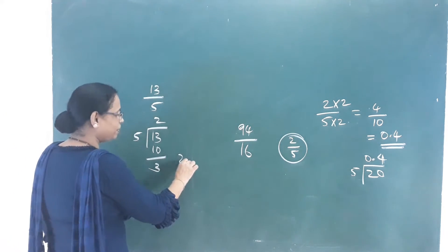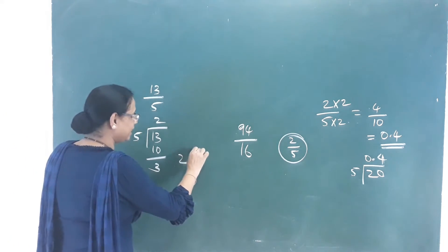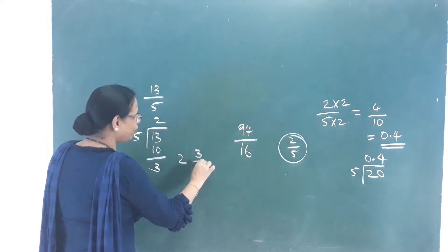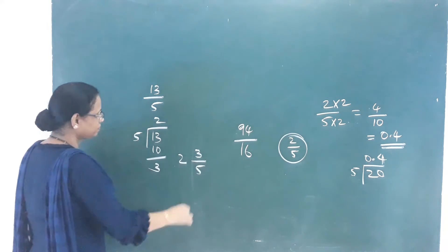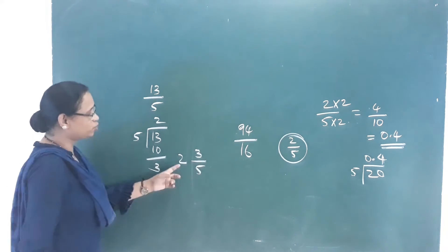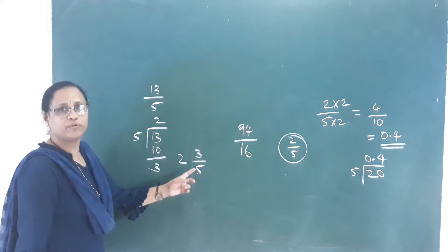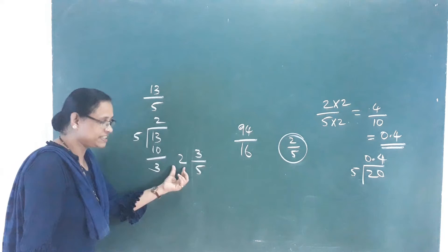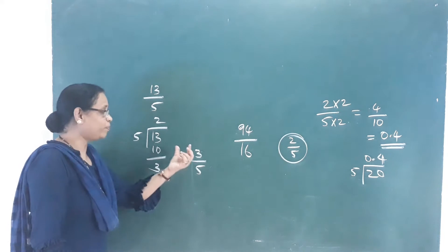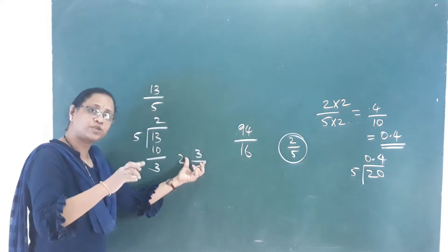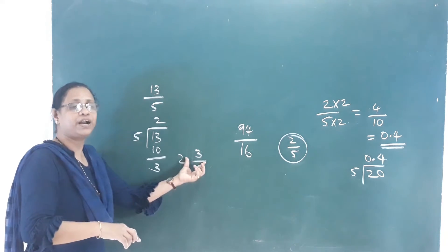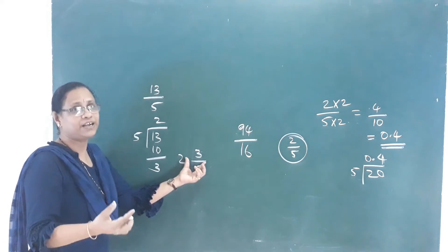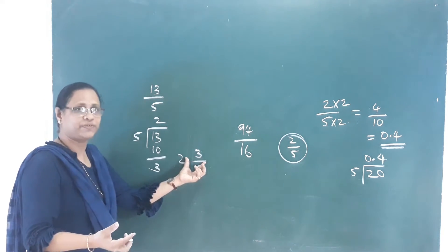So the result is 2 and 3 by 5. That is: one integer part and one proper fraction together — what is this called? A mixed fraction.